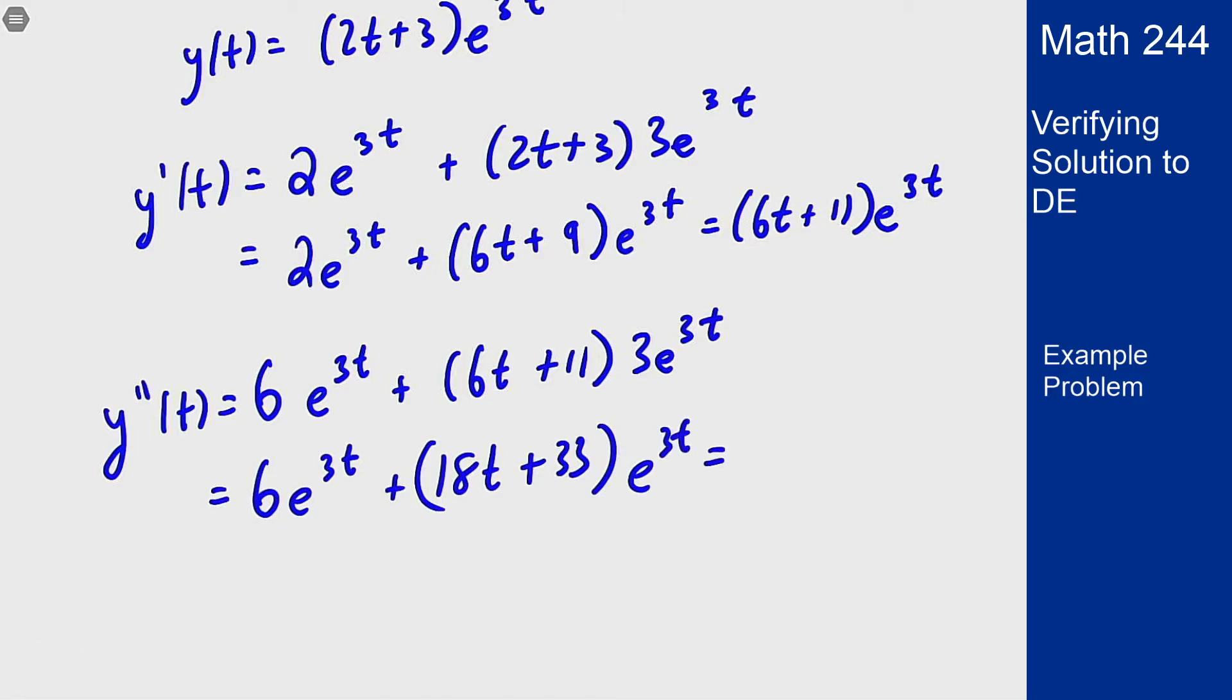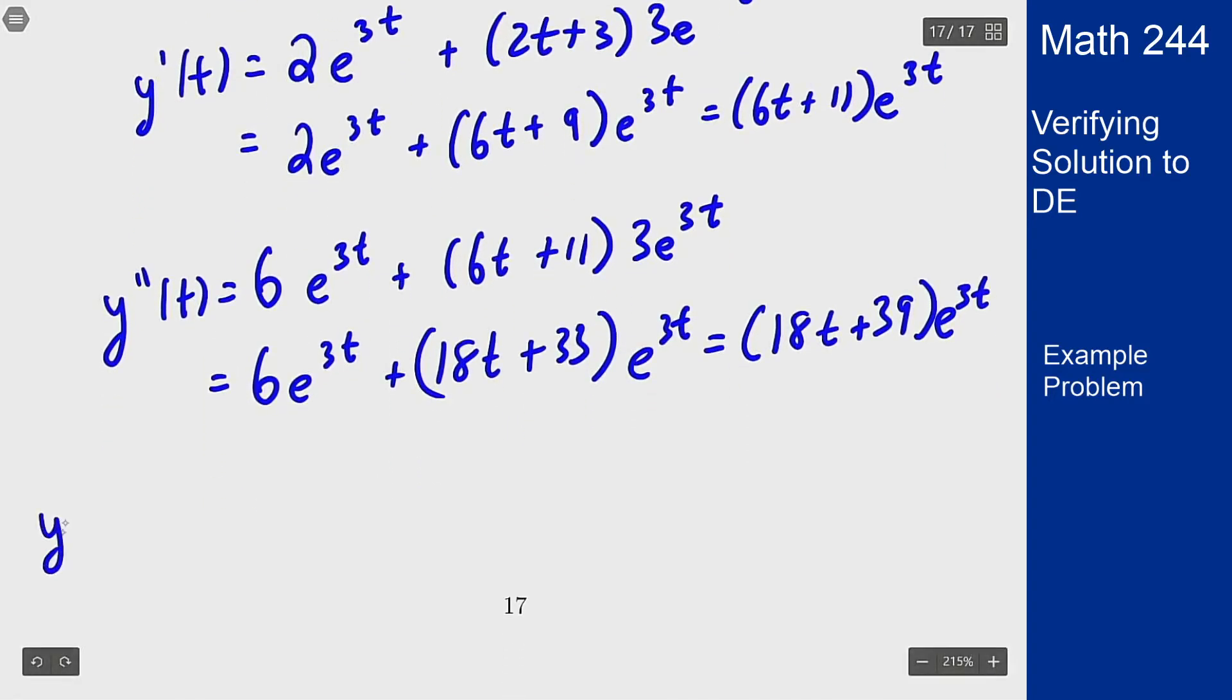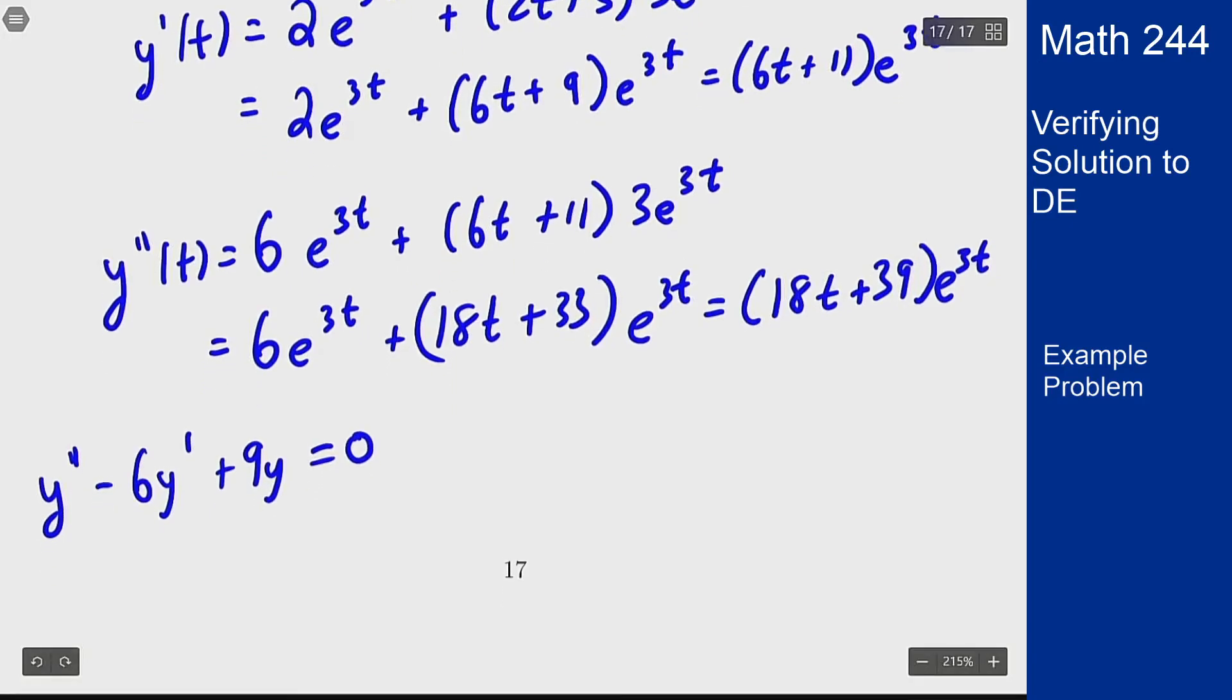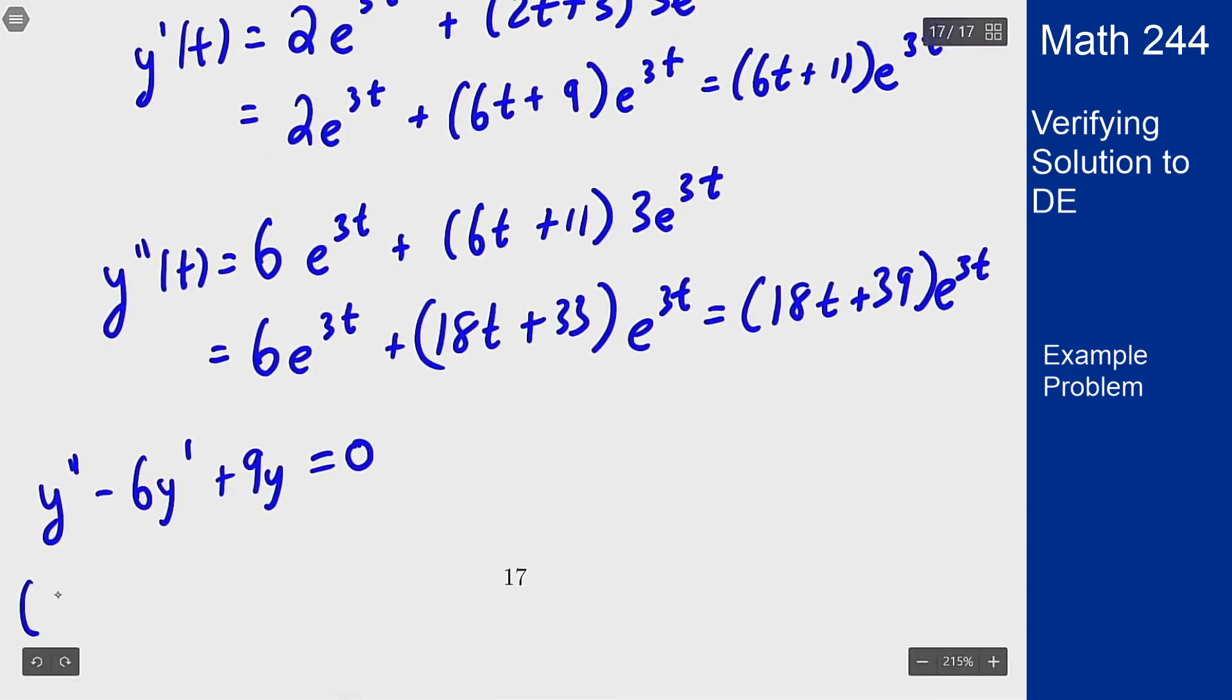And now we just want to see if this solves the right differential equation. So our equation was y'' - 6y' + 9y = 0. Now we just want to plug in all the different components here. The y'' we see is (18t + 39)e^(3t) minus 6y' so 6(6t + 11)e^(3t) and then plus 9y which is 9(2t + 3)e^(3t).